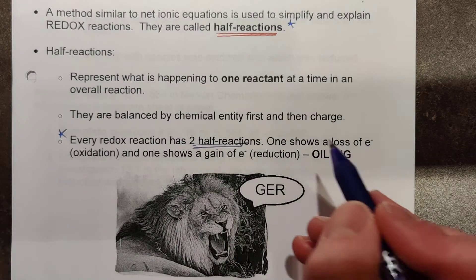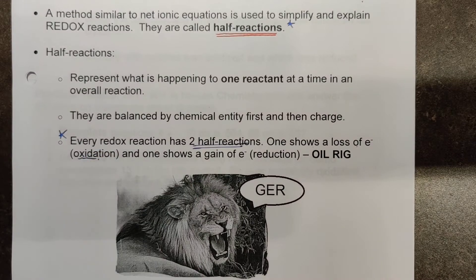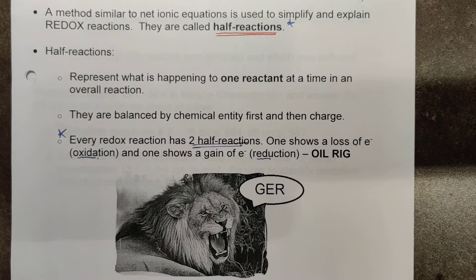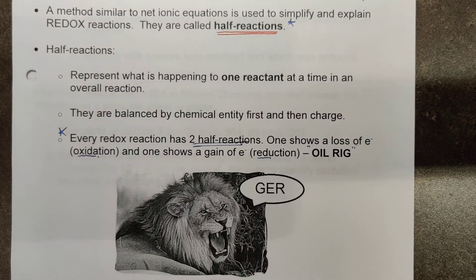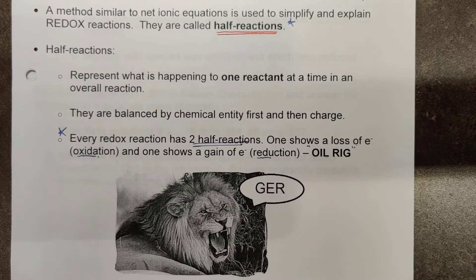So in one half reaction, one will always show a loss of electrons. There's your oxidation. And the other must show a gain of electrons, which is your reduction. This is given as a little moniker or mnemonic that you guys have in your textbook, and it likes to refer to OIL RIG, which oxidation is losing of electrons, and reduction is gaining of electrons. So just something to help you remember the two half reactions.